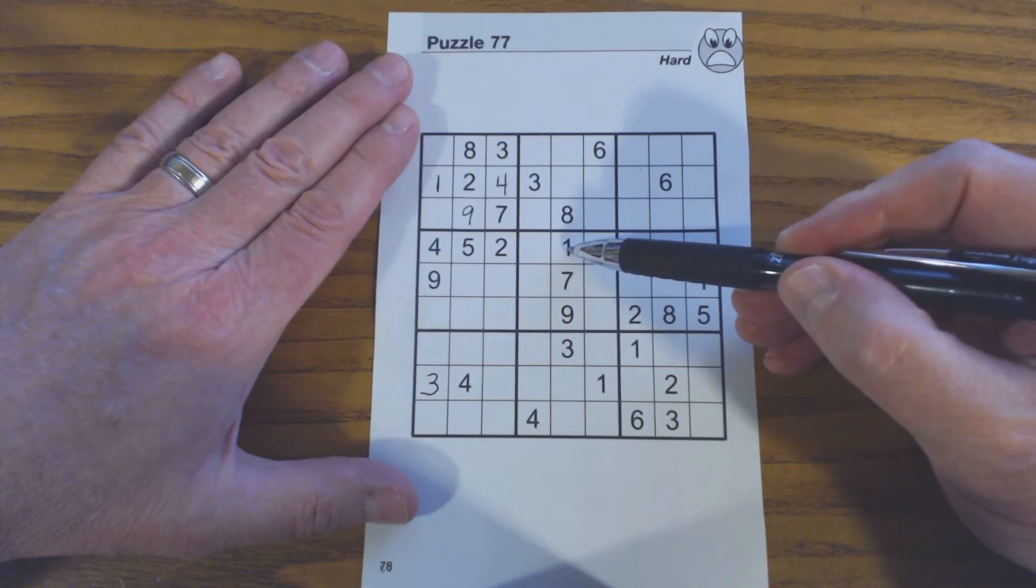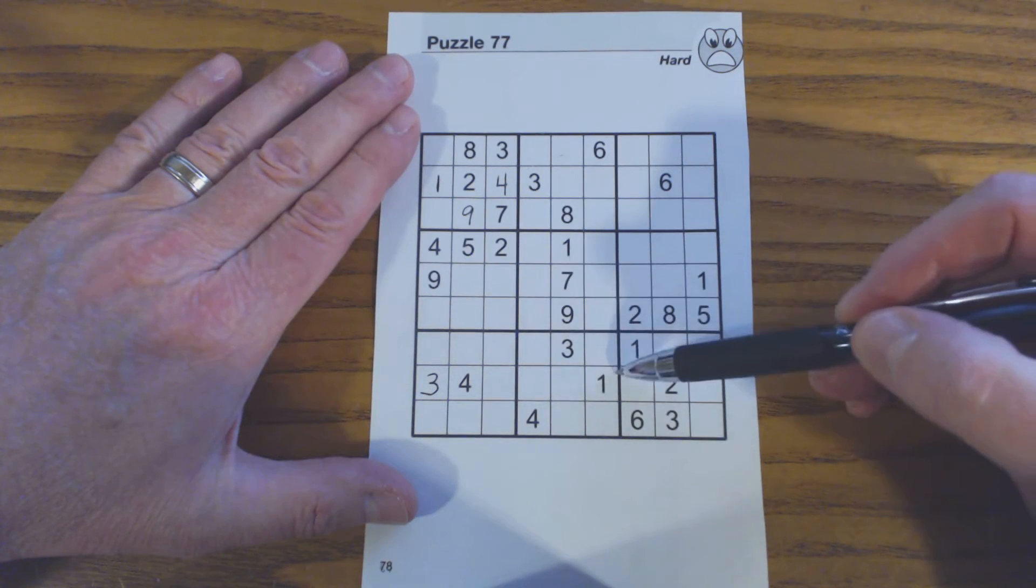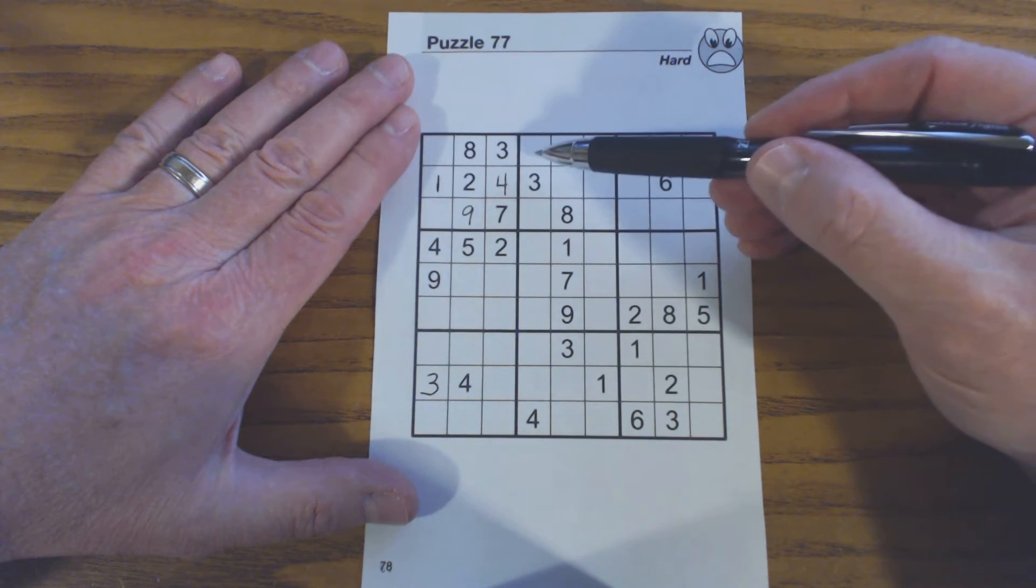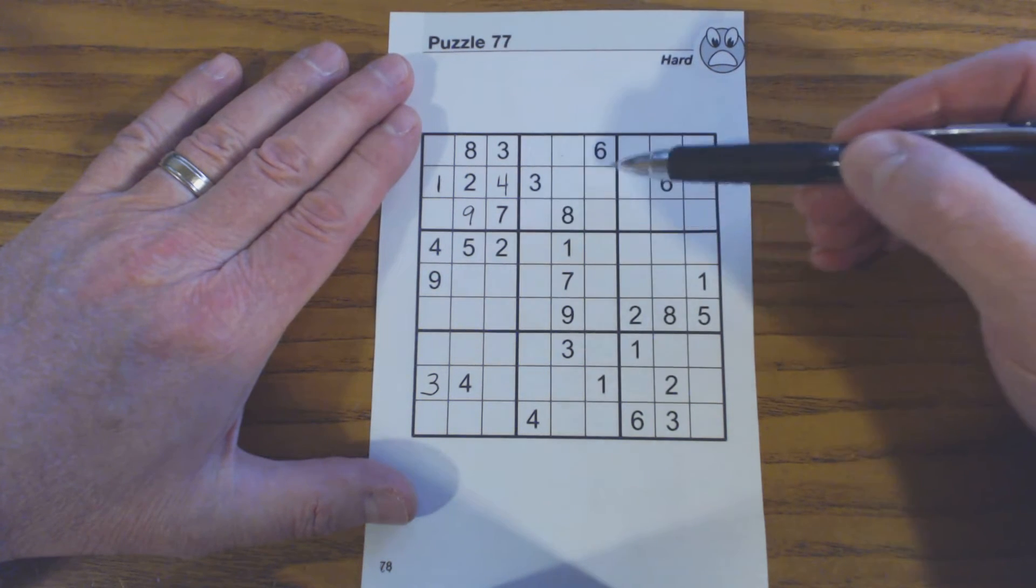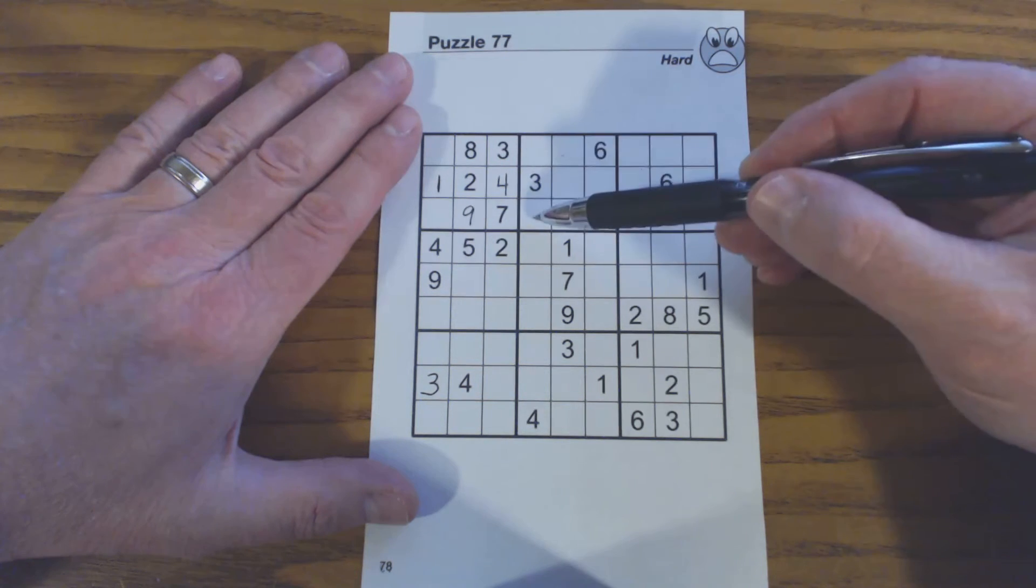Well if you look here in this section you've got a one in column two and a one in column three. So column one in this square has to have the one and it's got to either be in row one or row three.